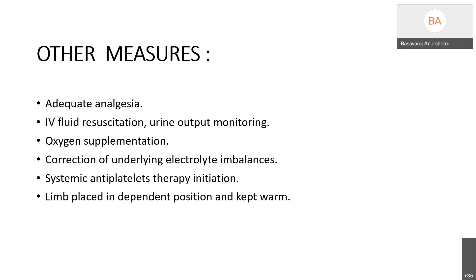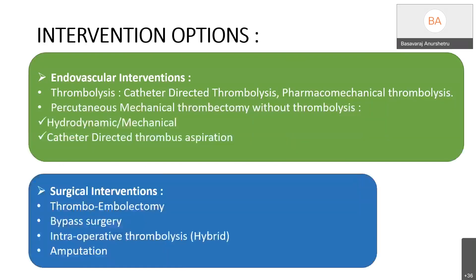There are various intervention options including both endovascular and surgical interventions. Endovascular interventions include thrombolysis — either catheter-directed thrombolysis or pharmacomechanical thrombolysis — and percutaneous mechanical thrombectomy, including hydrodynamic or mechanical devices and catheter-directed thrombus aspiration. Surgical interventions include thromboembolectomy, bypass surgeries, intraoperative thrombolysis, hybrid procedures, and as a last resort, amputation.